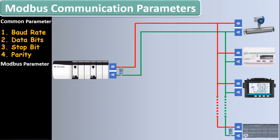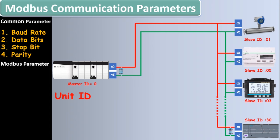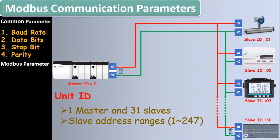Now we will see the Modbus parameters one by one. The first Modbus parameter is the unit ID. Every device in a communication network has its own unique ID. In this animation, the master has been given ID 0, and slaves have been given IDs 1, 2, 3, and 30 respectively. In a Modbus RS485 communication loop there is 1 master and up to 31 slaves, but the number of slaves can be increased using a Modbus repeater up to 247. So the slave address ranges from 1 to 247. Modbus communication is always initiated by the master; the slave never transmits data without receiving a request from the master, and slaves never communicate with each other.